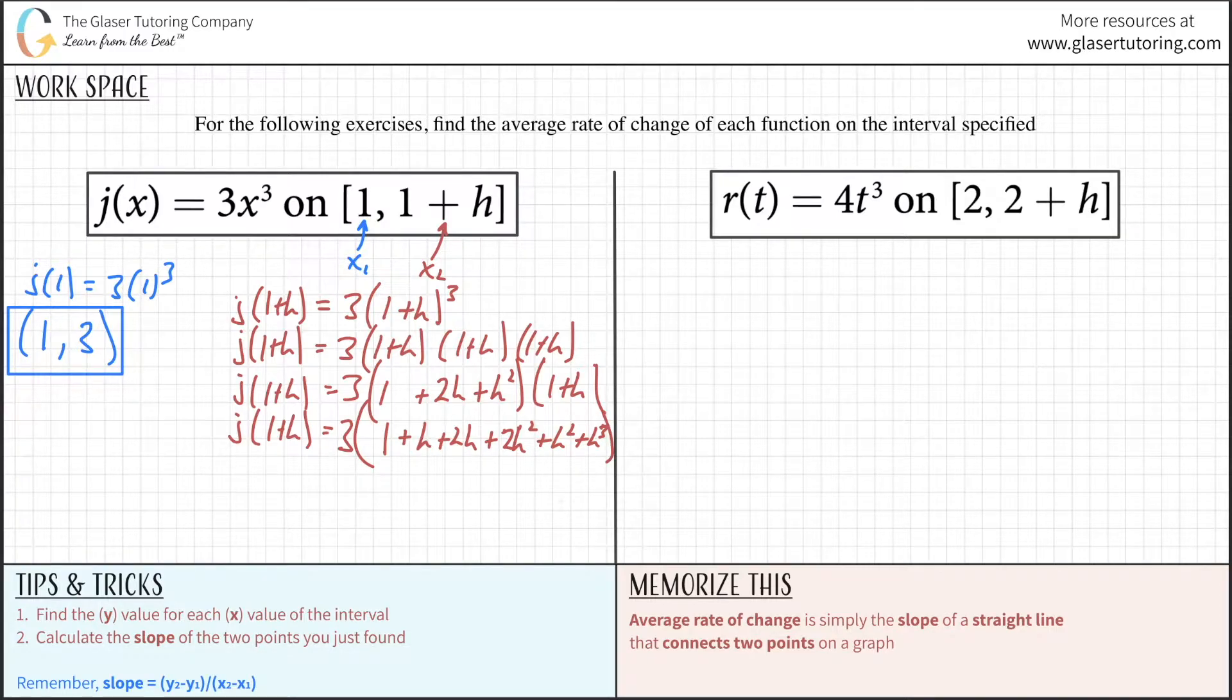Now we can simplify this. So j of 1 plus h equals 3 times (1 plus 3h plus 3h squared plus h cubed). I combined the like terms. Now distribute the 3.